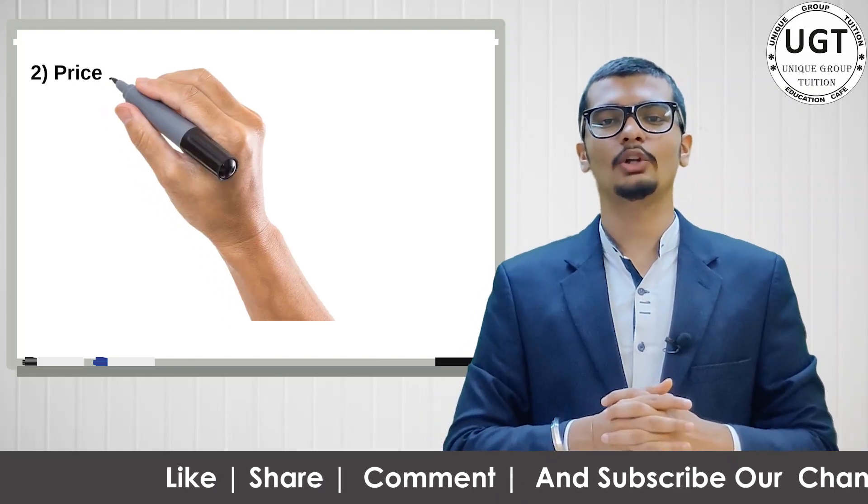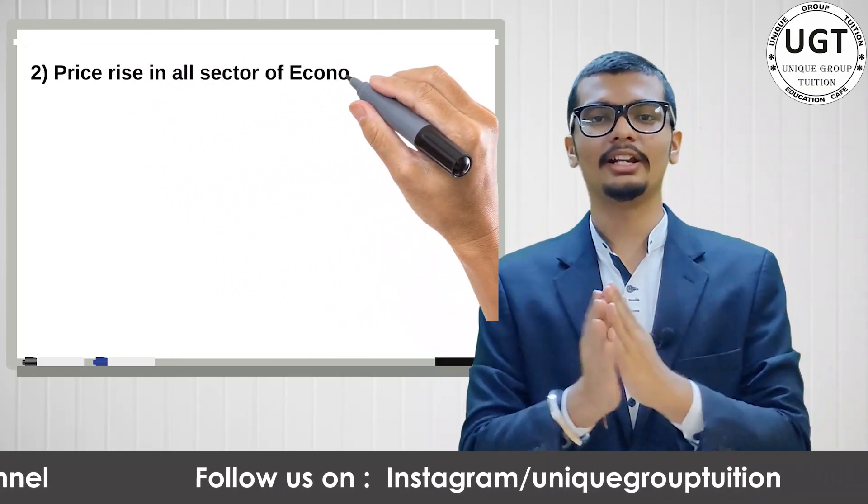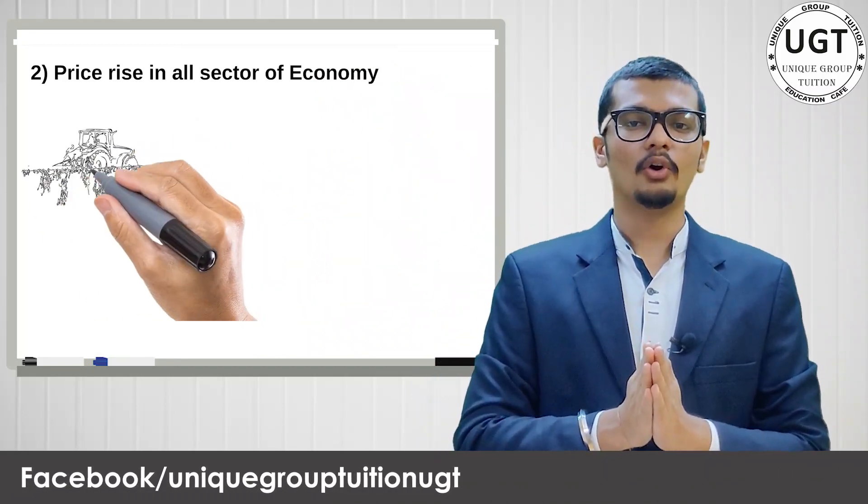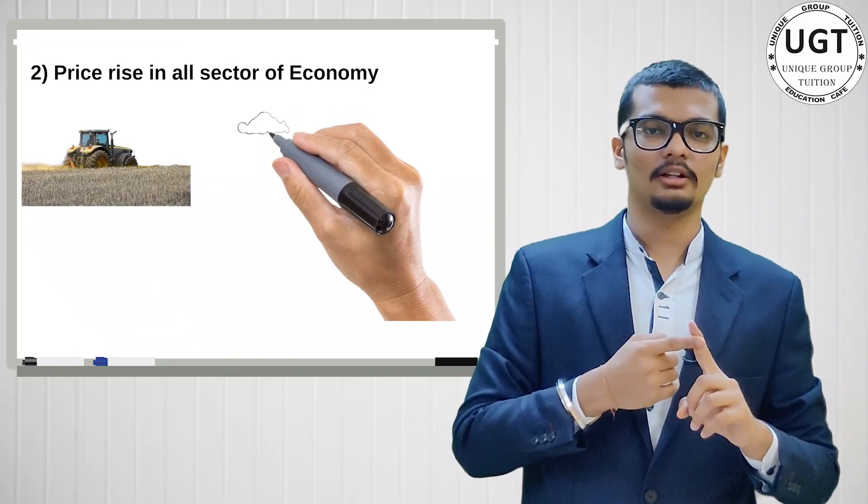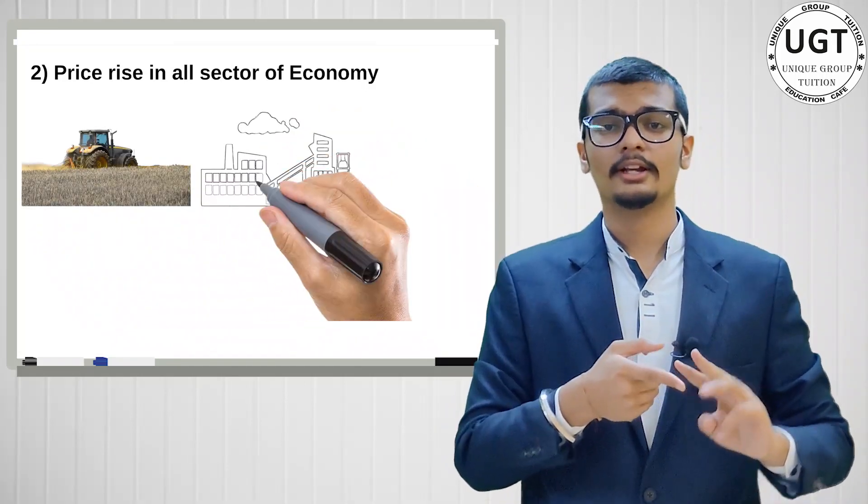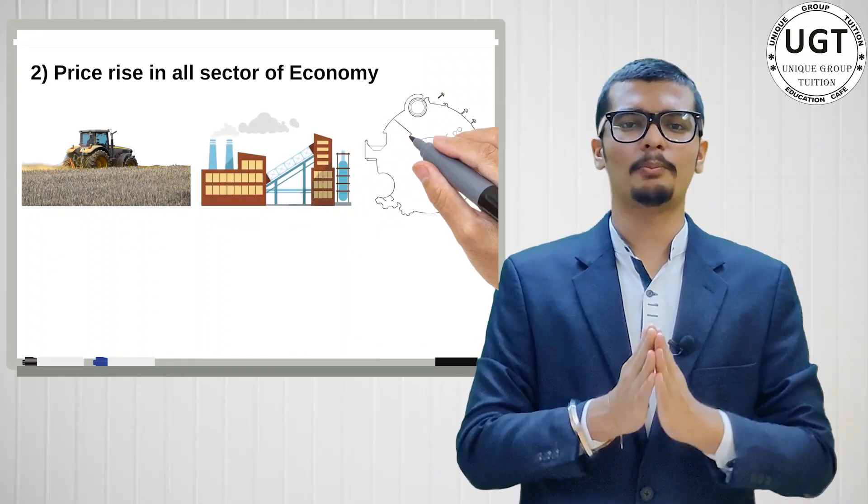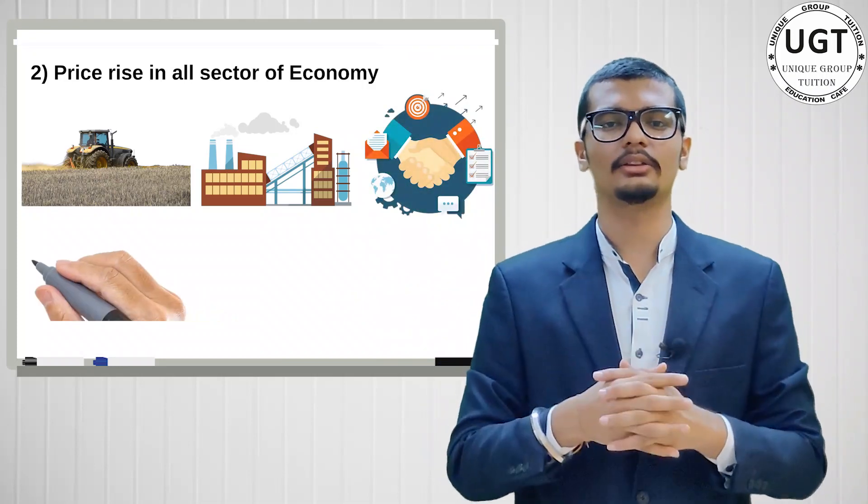Characteristic number 2: price rise in all sectors of the economy. In a country's economy, if there is price rise, it should be in agriculture, industrial sector, service sector - any main sector. Then we call it inflation.